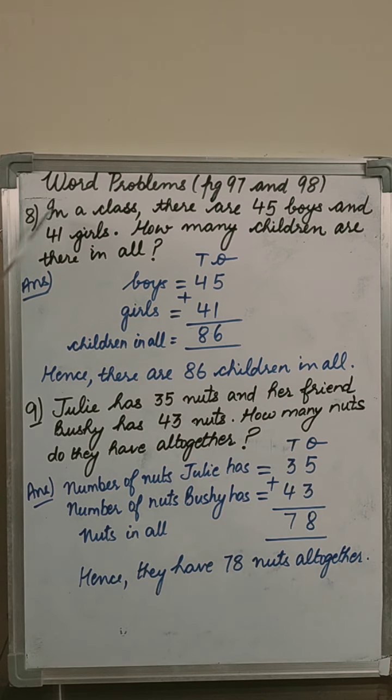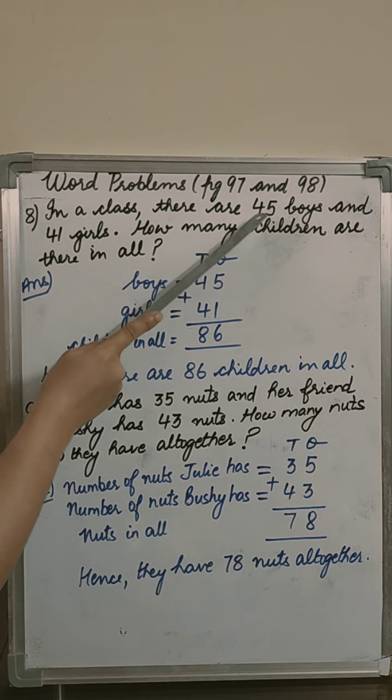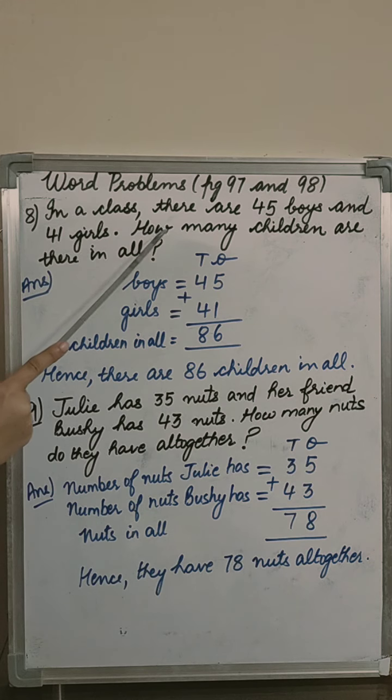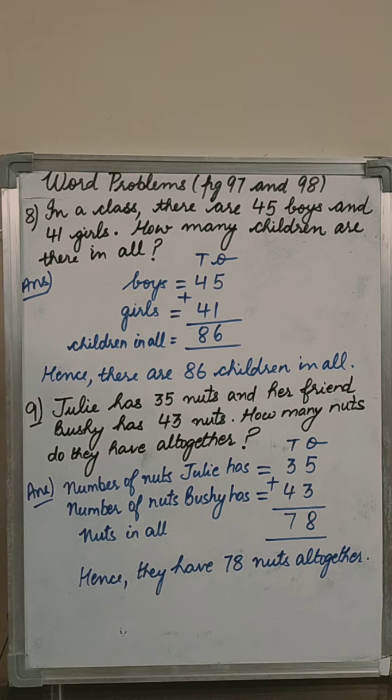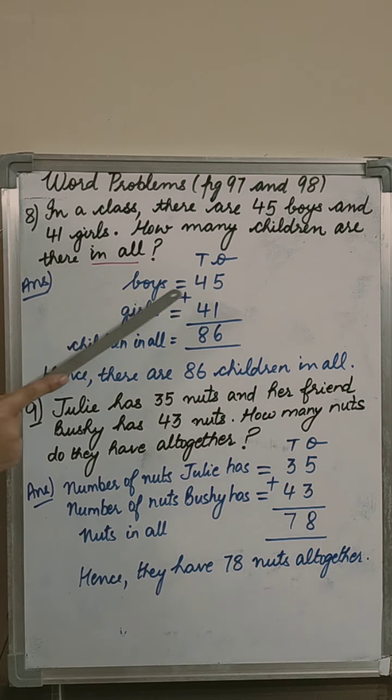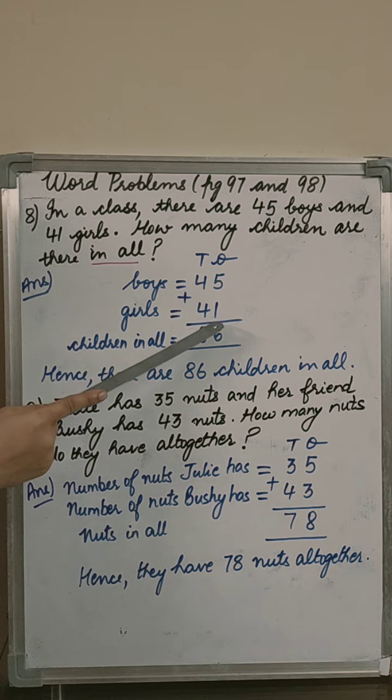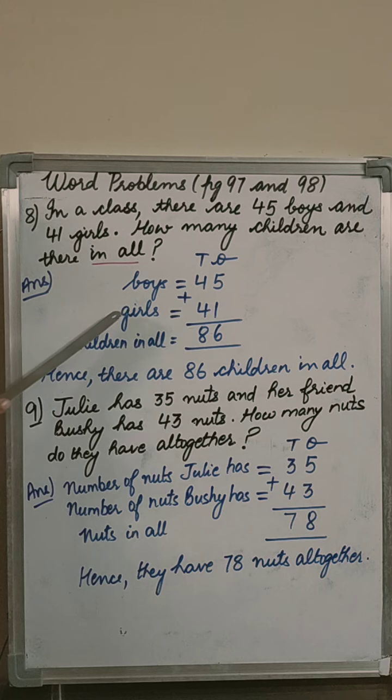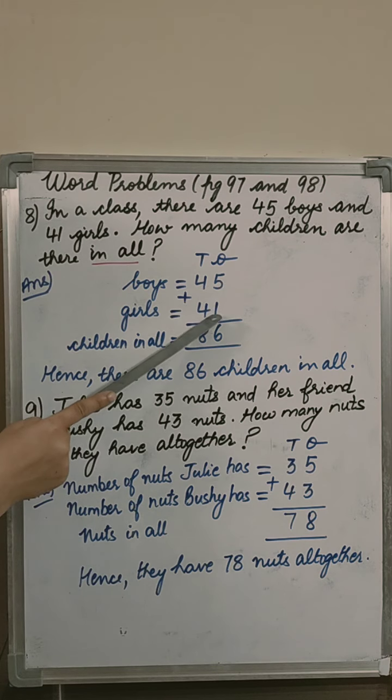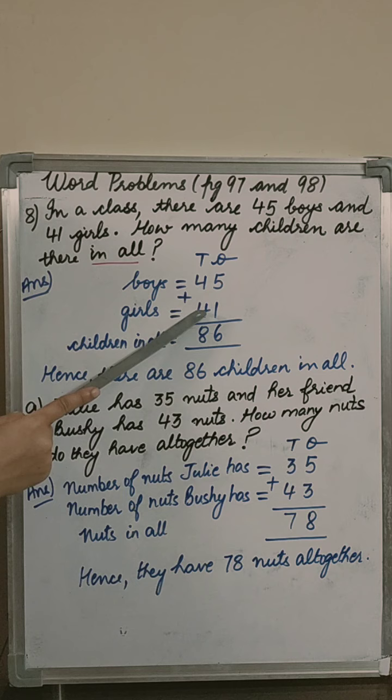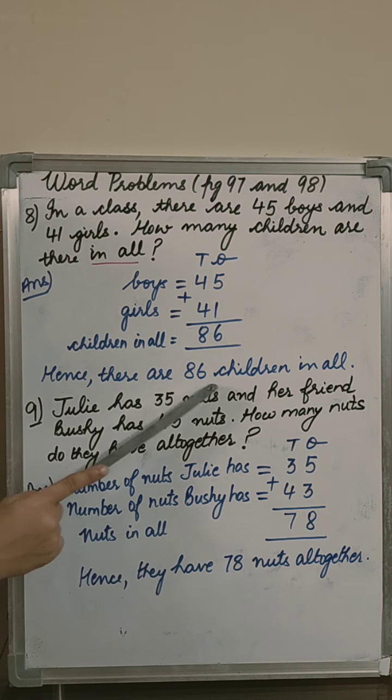Come to the next question. In a class, there are 45 boys and 41 girls. How many children are there in all? The keyword is in all. In all means you have to add. 45 boys and 41 girls. Children in all means total number of boys plus girls together. 5 plus 1, 6. 4 plus 4, 8. Hence, there are 86 children in all.